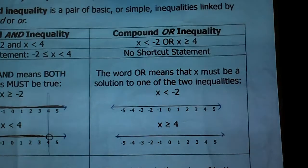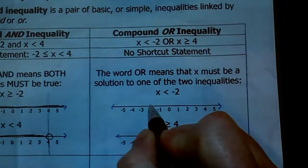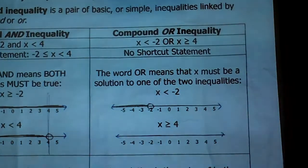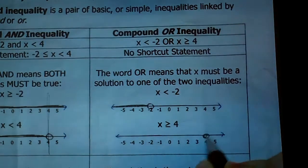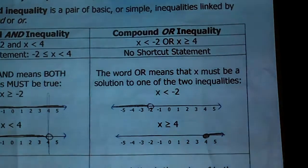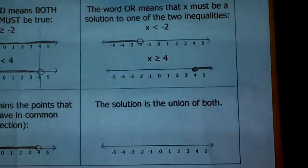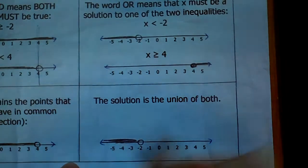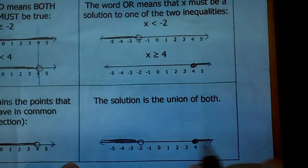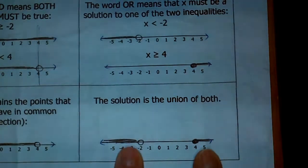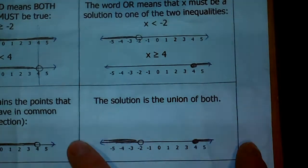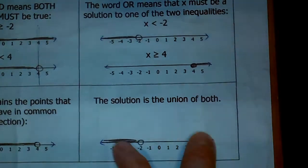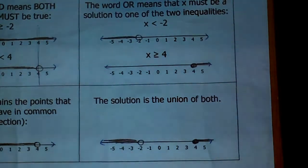The word 'or' means that x must be a solution to one of the two inequalities. If x is less than negative 2, it can't be negative 2. If x is greater than or equal to 4, then x can be 4 and all values greater. The graph of the solution is just a union of the two graphs together. An 'or' graph kind of looks like oars in a boat — you're sitting in the boat with oars going out on either side. An 'or' will always look like that; they're not connected, they're heading out like oars.